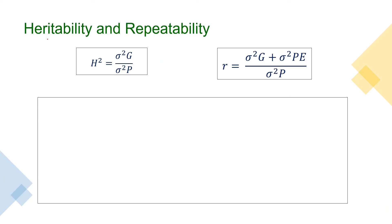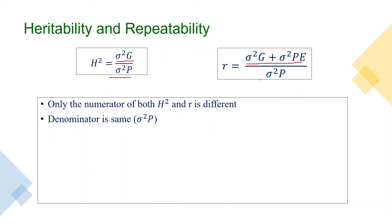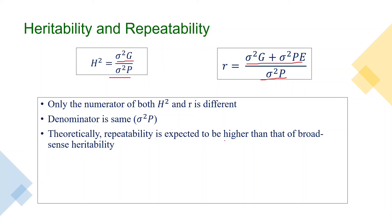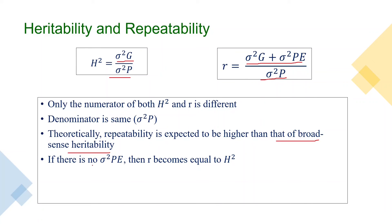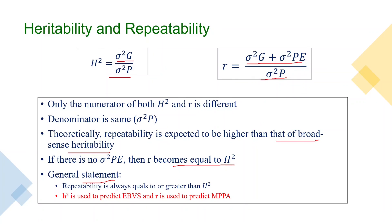The numerator of broad-sense heritability and repeatability differs, but the denominator — phenotypic variance — is the same. Theoretically, repeatability is expected to be higher than broad-sense heritability because it includes permanent environmental variance in the numerator. If there is no permanent environmental variance, then repeatability equals broad-sense heritability. Generally, repeatability is always equal to or greater than broad-sense heritability.